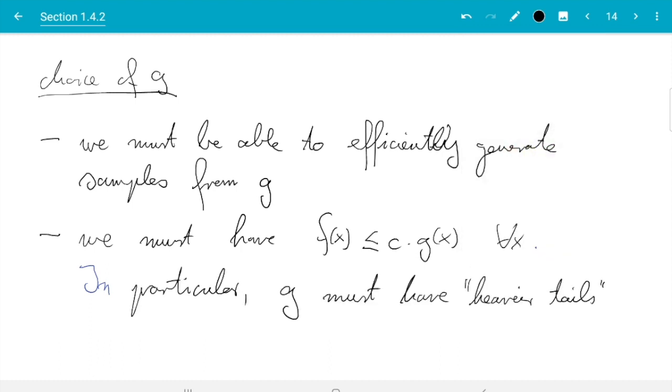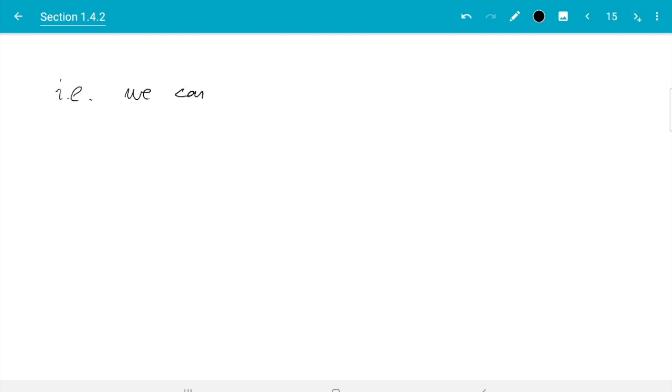Let me write what that means. It means we cannot have cases where the limit as x goes to infinity of g(x) over f(x) goes to zero. So g cannot go to zero faster than f does, else we have no chance to satisfy the constraint f ≤ cg.